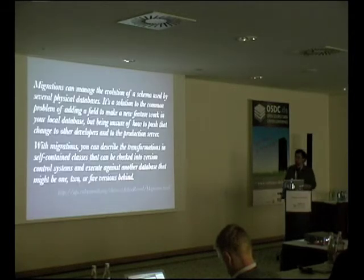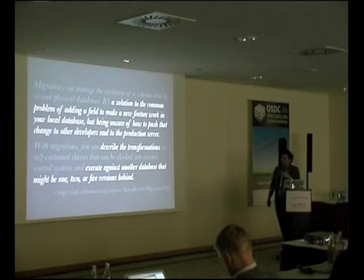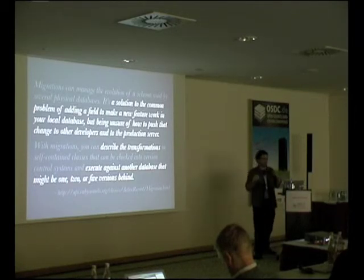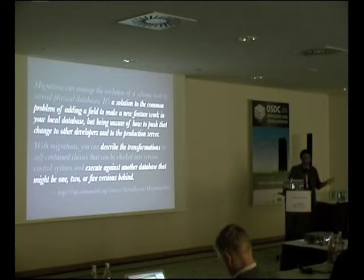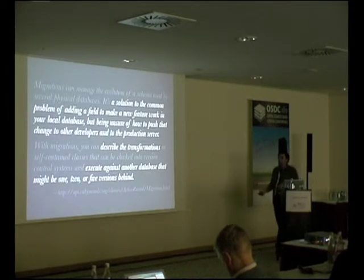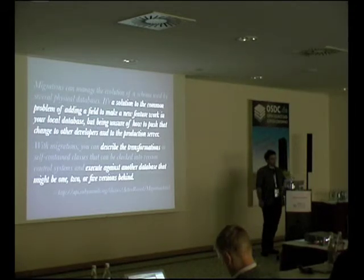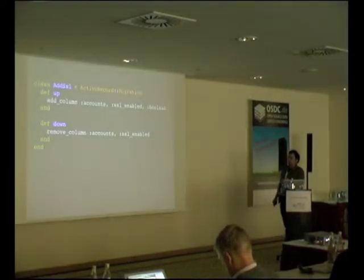In ActiveRecord, a migration has an up and a down — going forward and going back. For example, adding a column to the accounts table called ssl_enabled as a boolean, and then removing it when rolling back. There's also a database migration tool called SQL which does something fairly similar but is a bit more Ruby-like in the DSL.